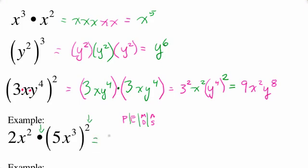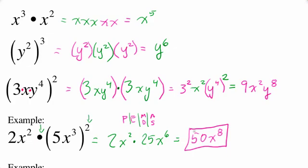The first step is to rewrite 2x squared, and now we're going to multiply this by the square of 5x cubed. Five x cubed quantity squared is five squared, which is 25, times x cubed squared, which is x to the sixth. Now we multiply straight across: two times 25 is 50, and x squared times x to the sixth — using the product rule, we add the exponents — gives x to the eighth. Our final answer is 50x to the eighth.